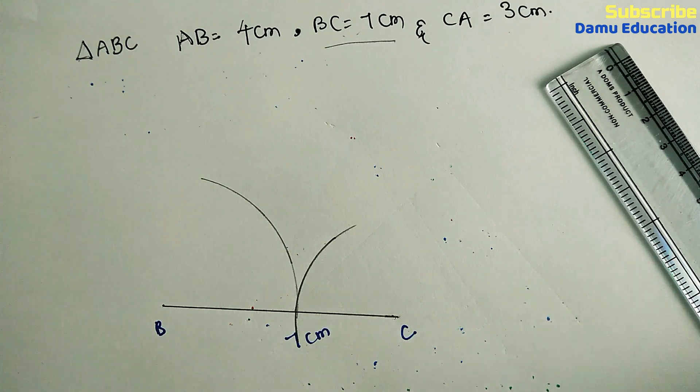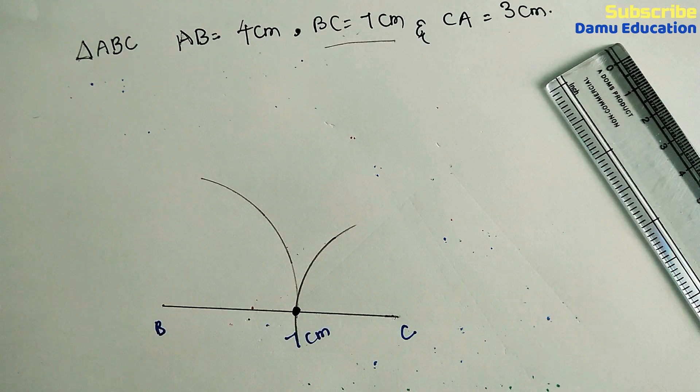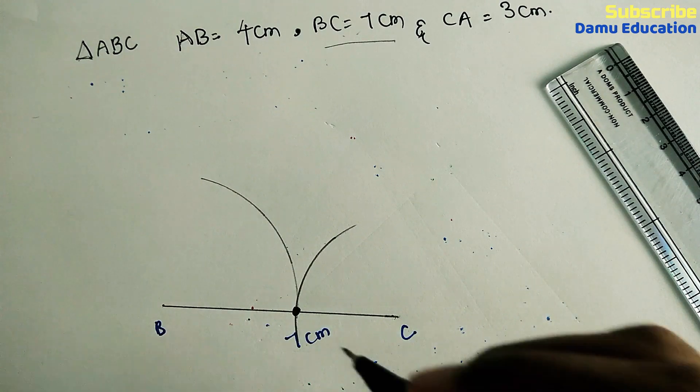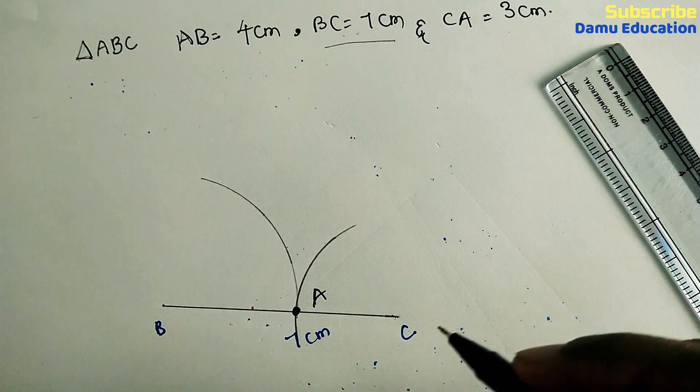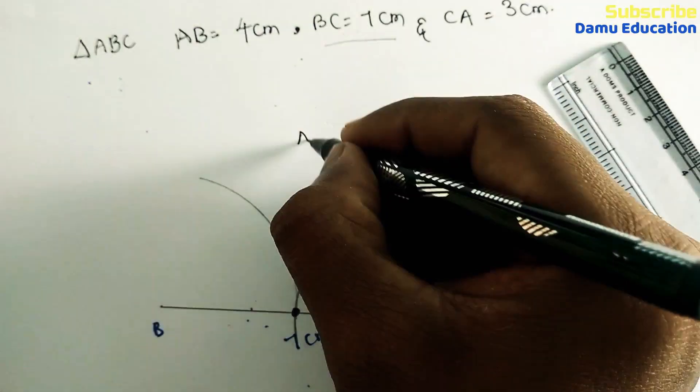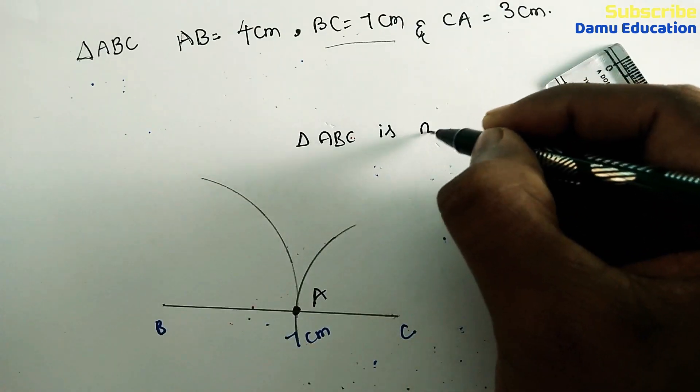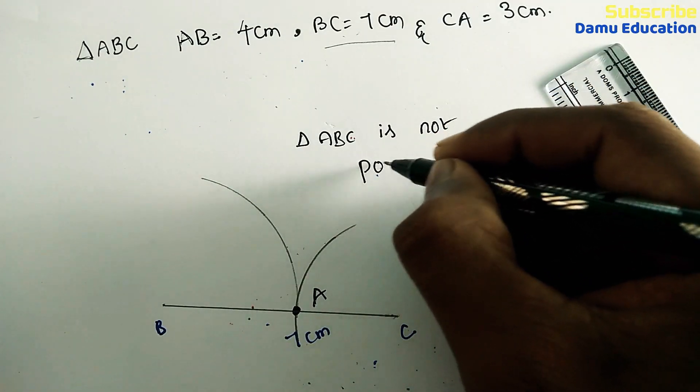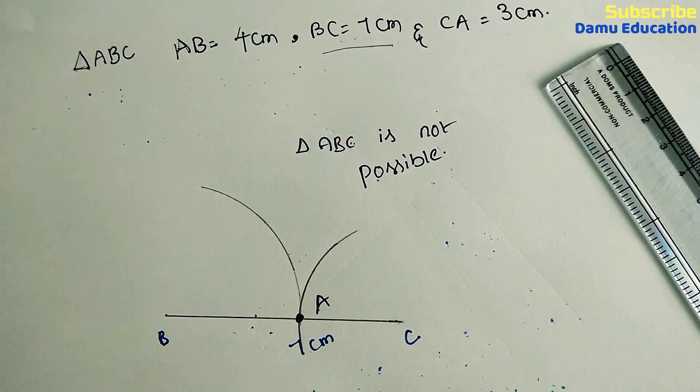Where do these two arcs coincide? At this point. That is A. So here, the triangle is not yet constructed. Triangle ABC is not possible. Triangle ABC is not possible.